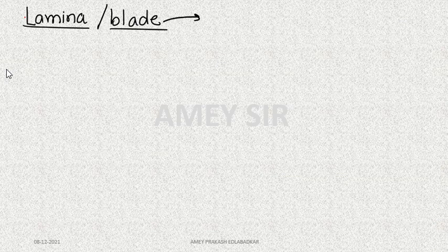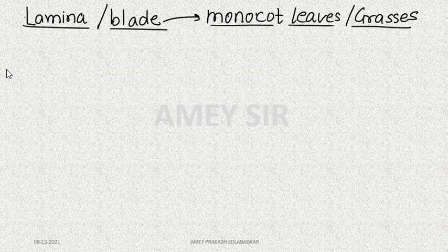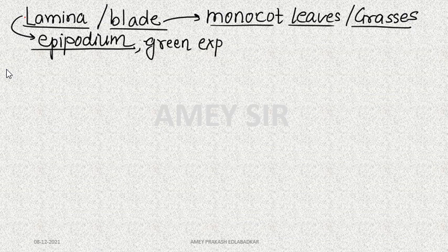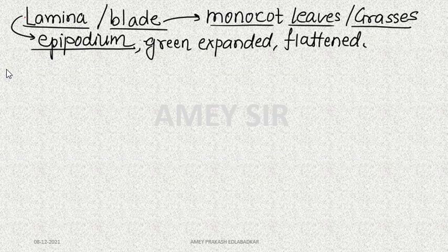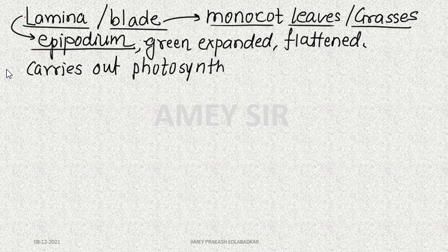The most important structure of the leaf is the lamina — sometimes called the blade. The term blade is especially applied to monocot leaves, particularly grasses, referring to a sword-like structure. The lamina is also called the epipodium. It is a green, expanded, flattened structure with two distinct surfaces that carries out photosynthesis, transpiration, and gaseous exchange.